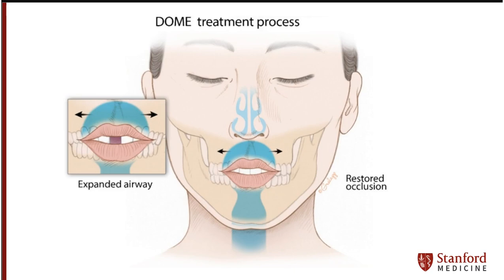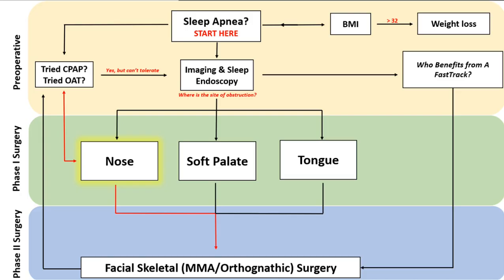Seven to ten days after surgery, patients will start to turn the expander at a rate determined by the orthodontist and surgeon. Generally, one centimeter of separation between the maxilla is achieved over a few weeks, which translates to approximately the same amount at the nasal floor. Realignment of the teeth typically takes place afterwards, with clear aligners used to camouflage the gap between the two front teeth so that there is minimal cosmetic disruption.